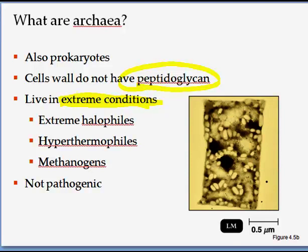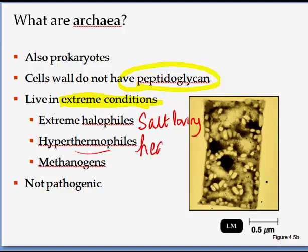With the advent of life, the first kind of cells that were present were archaea cells, because the environment of the earth was very different at that time. There was very high temperature, heavy concentrations of methane gas, no oxygen, and very high salt concentrations. So these are called extreme halophiles — the salt-loving organisms. Hyperthermophiles are the heat-loving archaea, still found especially in hot springs. And methanogens are those that grow with methane. These are the ancestral organisms and most of them are not even pathogenic.